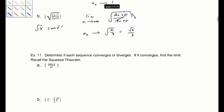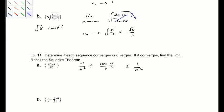To determine if these converge or diverge, recall the squeeze theorem. Cosine is stuck between negative 1 and 1, so cosine(n) over n² is bounded between negative 1 over n² and 1 over n². As both of those go to 0, this sequence converges to 0 as well.